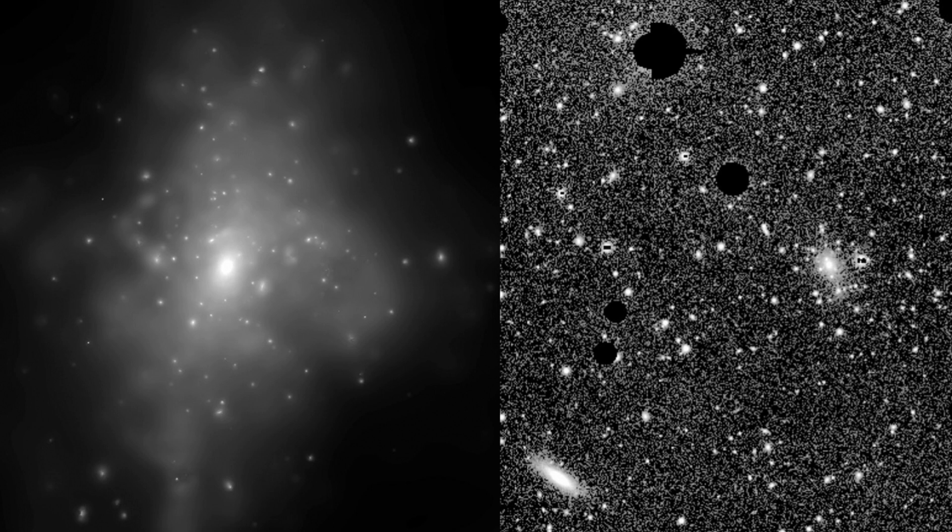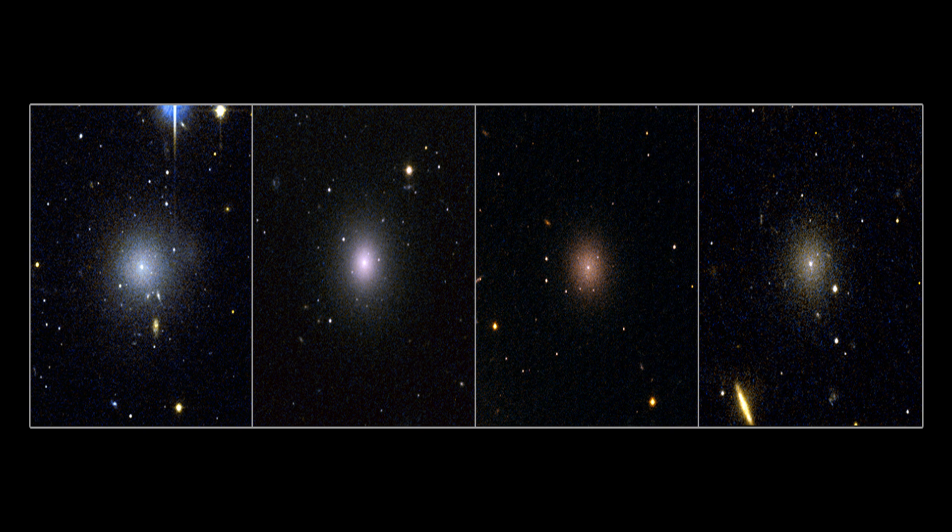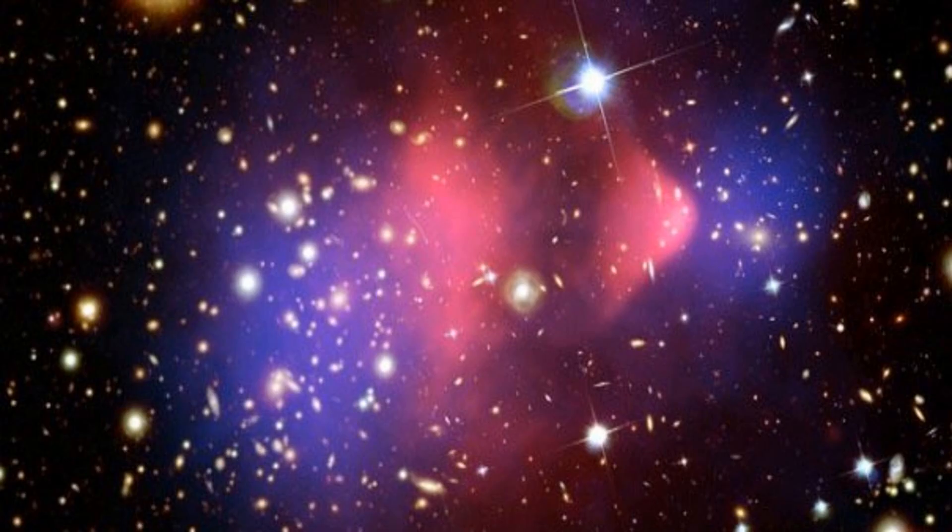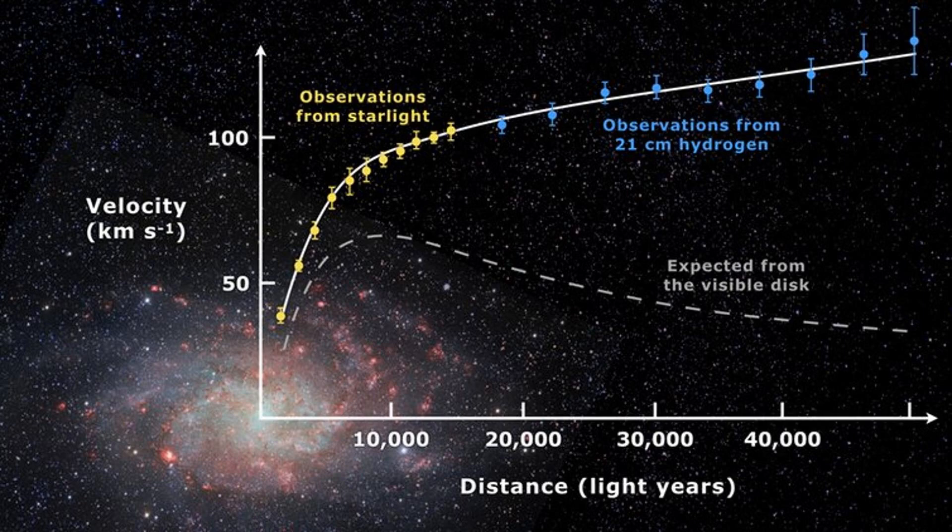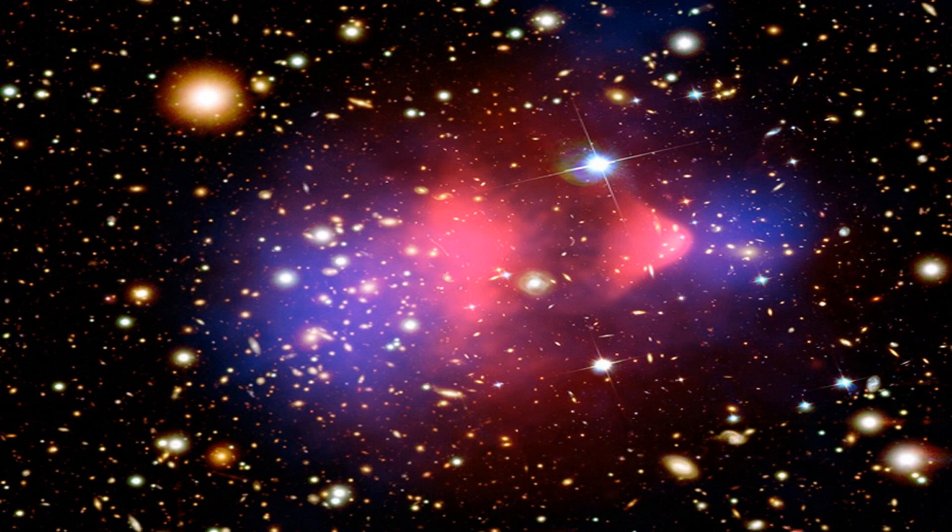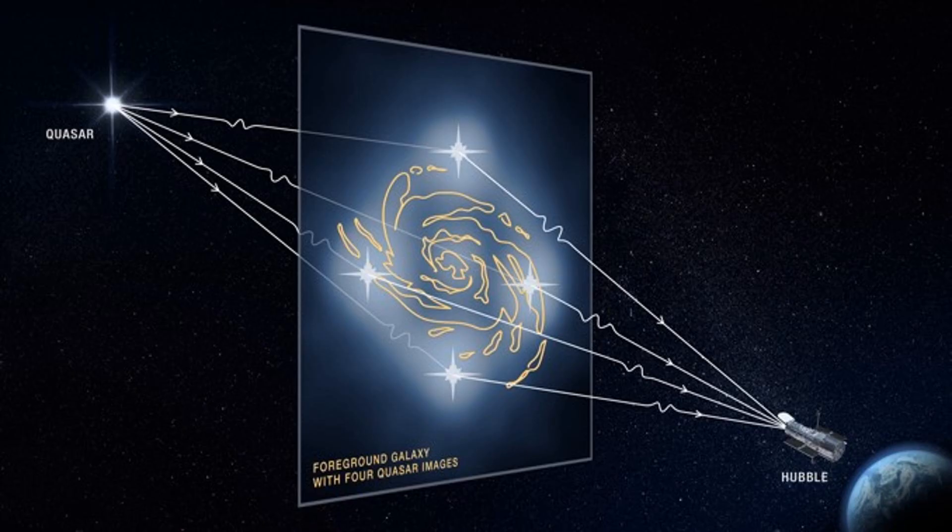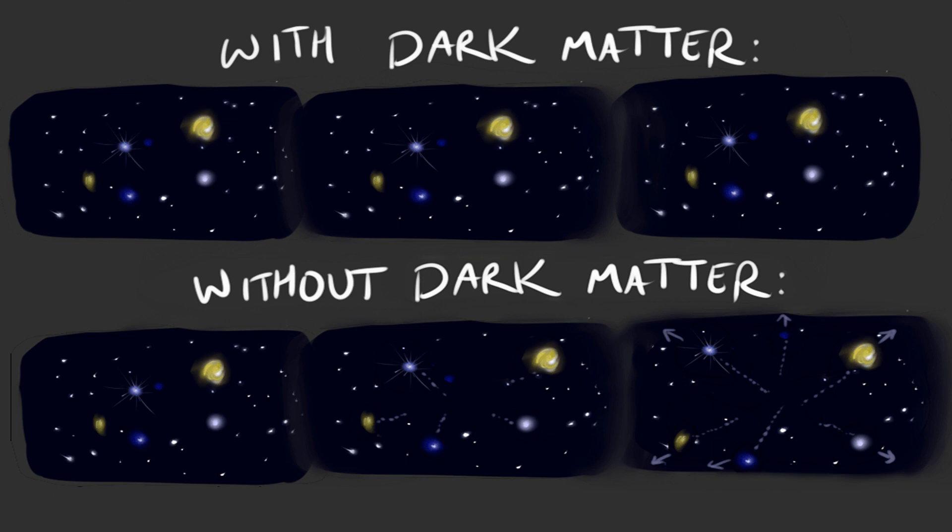Despite its elusiveness, scientists have gathered a significant amount of evidence for the existence of dark matter. One of the strongest pieces of evidence is the gravitational lensing effect, where the gravity of a massive object like a galaxy or cluster of galaxies can bend the light from objects behind it. By studying this effect, astronomers have been able to map the distribution of dark matter in the universe. Other evidence comes from studies of the cosmic microwave background radiation, the afterglow of the Big Bang. The observed fluctuations in this radiation can only be explained by the presence of dark matter. Finally, simulations of galaxy and galaxy cluster formation also support the existence of dark matter, as they are able to reproduce the large-scale structure of the universe only if dark matter is included as a component.